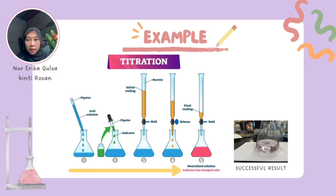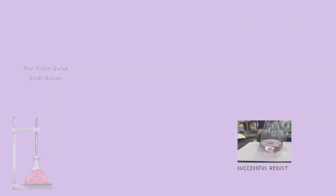As soon as the indicator shows a sustained color change indicating that the acid has been neutralized, we stop adding the base. The color of the solution should be pale pink, indicating that the titration is successful. We record the final reading of the burette. The volume of base solution used is determined by subtracting the initial reading from the final reading.